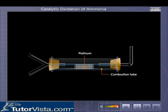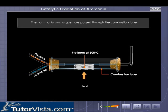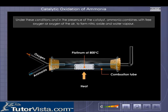The apparatus required for the laboratory demonstration of this process is shown here. The platinum coil is heated till it becomes white hot at about 800 degrees Celsius. Then ammonia and oxygen are passed through the combustion tube.